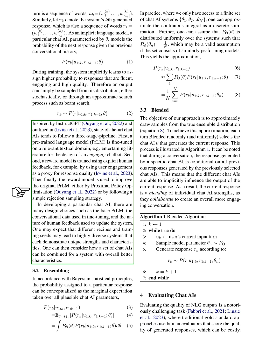State-of-the-art chat AIs typically follow a three-stage process. First, a pre-trained language model is fine-tuned on a relevant textual domain, like entertaining literature for an engaging chatbot. Second, a reward model is trained using explicit human feedback, such as user engagement, as a measure of response quality. Finally, the reward model is used to improve the original language model, either by proximal policy optimization or by following a simple rejection sampling strategy. There are many design choices in developing a chat AI, such as the base language model, the conversational data used in fine-tuning, and the type of human feedback used to update the system. Different combinations and training seeds can lead to diverse systems, each with unique strengths and characteristics. We can then consider how a set of chat AIs can be combined for a system with overall better characteristics.